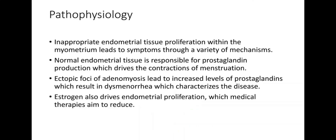Adjacent myometrial smooth muscle hypertrophy and hyperplasia also occur. Regarding pathophysiology, inappropriate endometrial tissue proliferation within the myometrium leads to symptoms through a variety of mechanisms. Normal endometrial tissue is responsible for prostaglandin production, which drives the contractions of menstruation. Ectopic foci of adenomyosis lead to increased levels of prostaglandins, resulting in dysmenorrhea, which mainly characterizes the disease. This also drives endometrial proliferation, which medical therapies aim to reduce.